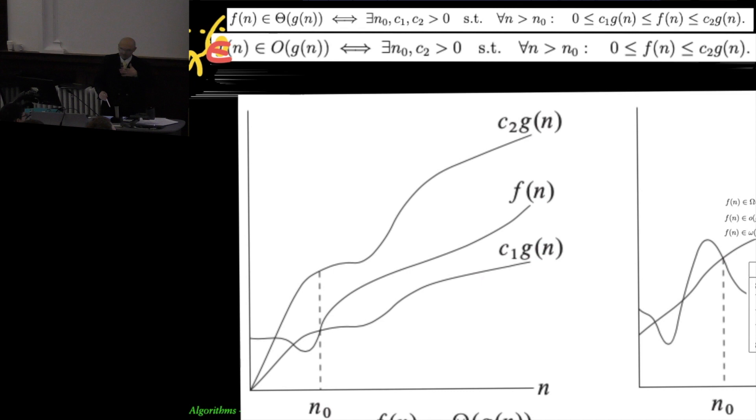You can also have just the bottom bound and say whatever you do is going to cost at least that. You say well if I'm going to sort n numbers it's going to cost at least a linear amount of time because I have to look at all of them. I can't sort the n numbers without looking at what they are and so it's going to be at least linear.